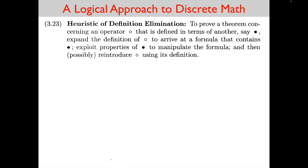The second topic is a heuristic. In paragraph 3.23 of our textbook, we have the heuristic of definition elimination. A heuristic is a rule of thumb or guideline — a recipe to help give you directions on how to prove a theorem. This particular heuristic says: to prove a theorem concerning an operator that is defined in terms of another, expand the definition of the first to arrive at a formula containing the second, exploit the properties of the second to manipulate the formula, and then reintroduce the first using its definition.